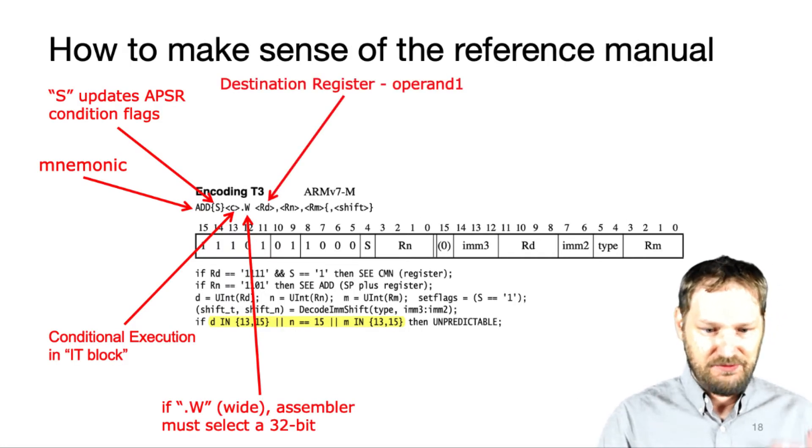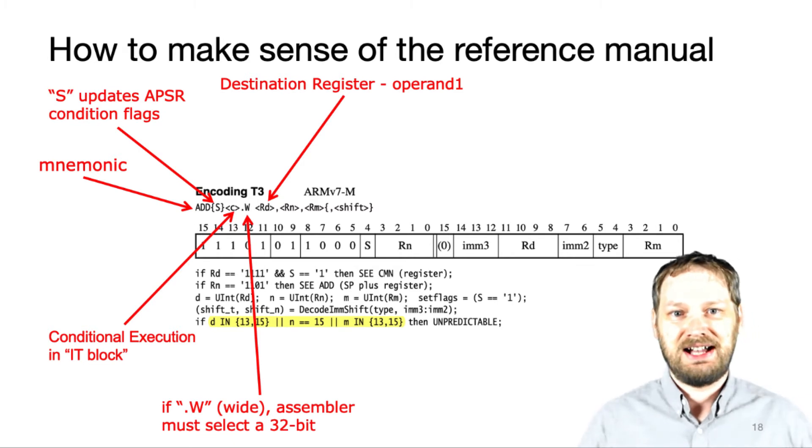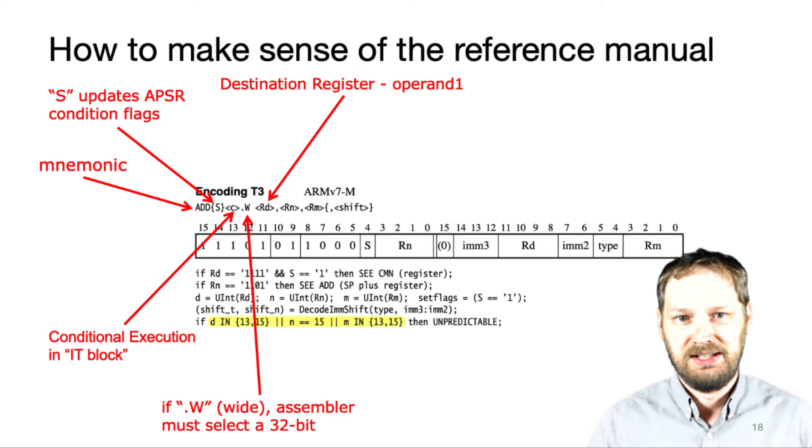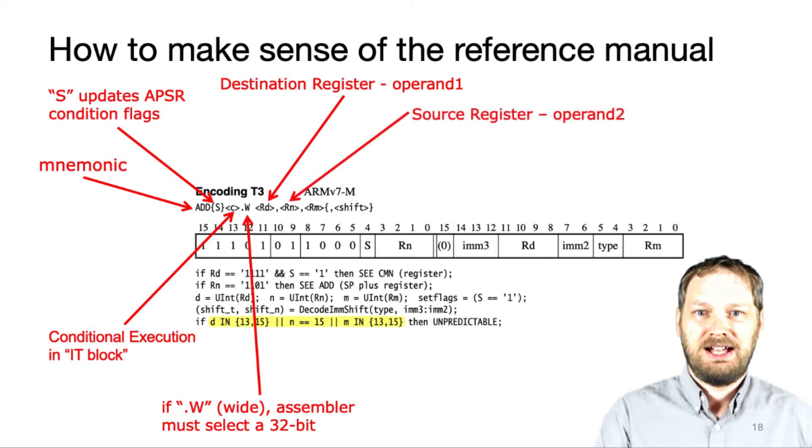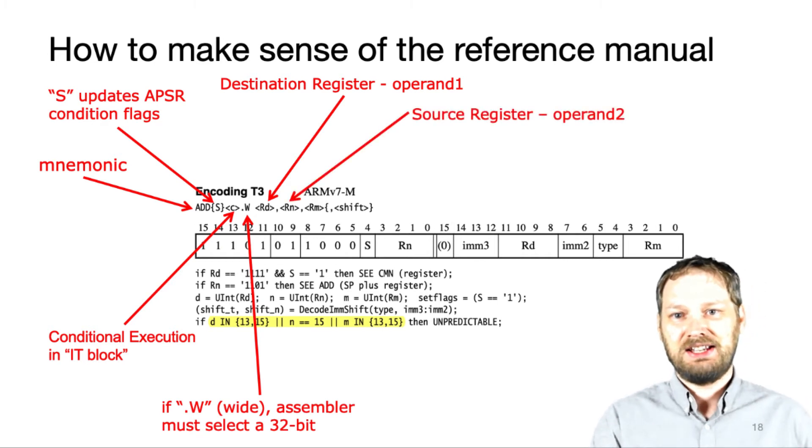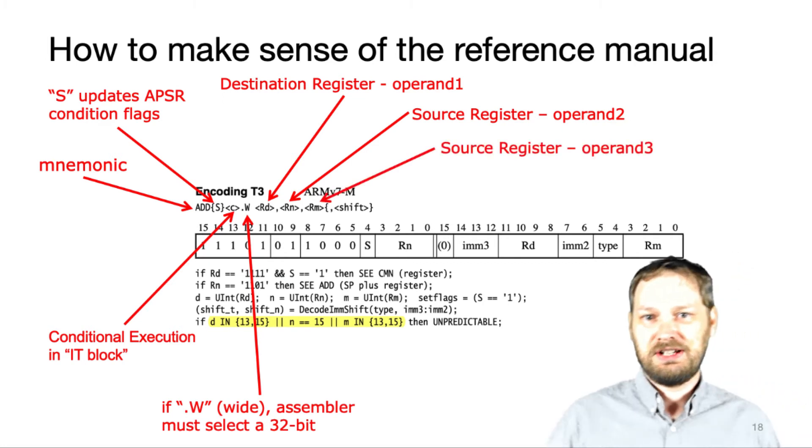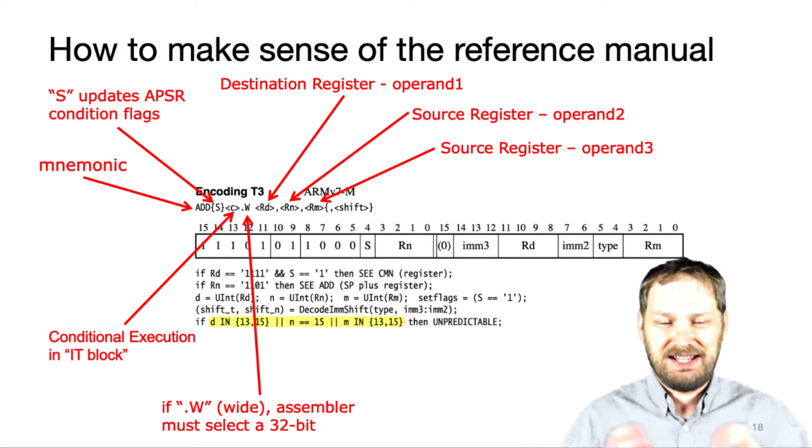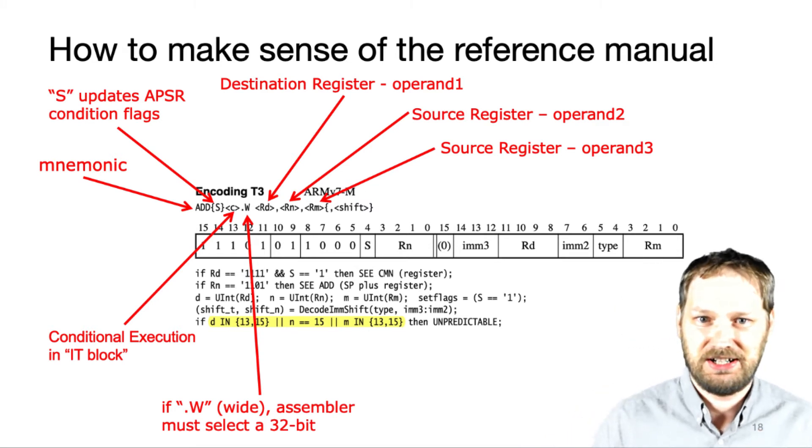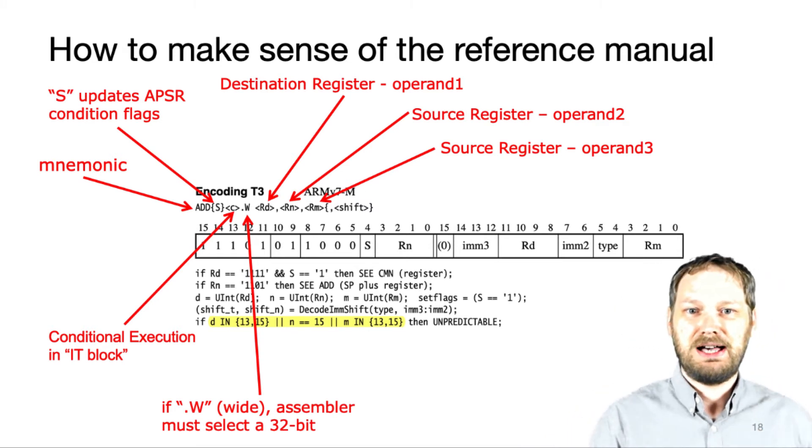Moving on, we have RD. This defines the destination register, operand one in that location. We have the second operand, a source register. And then we have a third operand, which is another source register, but it has a special characteristic here, as we read about before, that it can be optionally shifted.